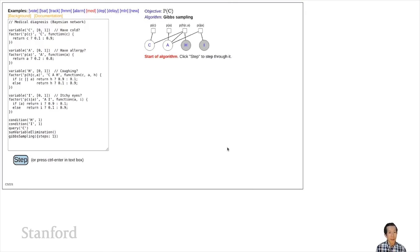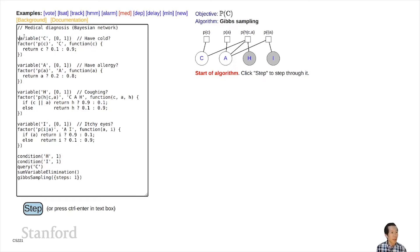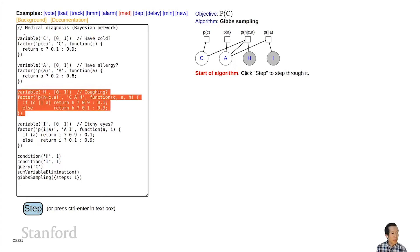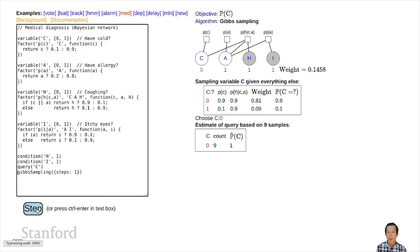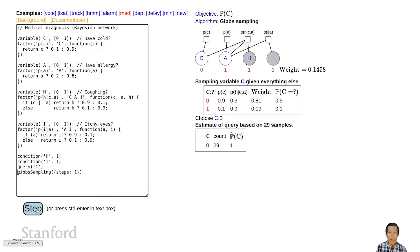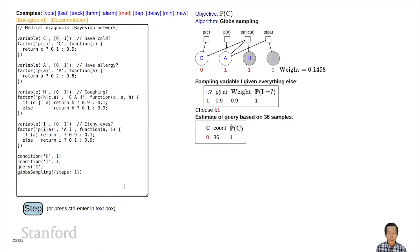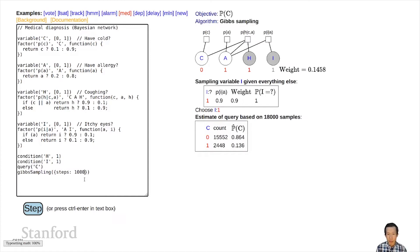Let's do that in this medical diagnosis example. We define variables c, a, h, and i, condition on h equals 1 and i equals 1, and we're interested in the marginal probability of c. We run Gibbs sampling, which takes the factor graph for the Markov network, goes through an assignment, and reassigns each variable one at a time, accumulating counts. Running a thousand steps at a time, these counts converge to the correct probability of c conditioned on h and i.